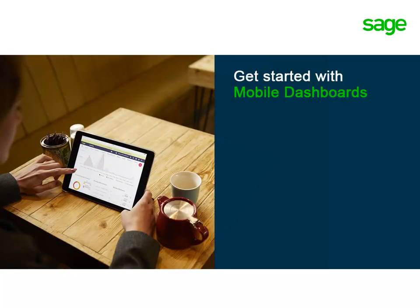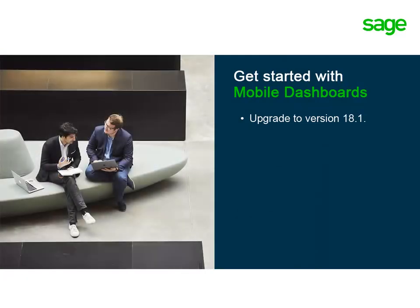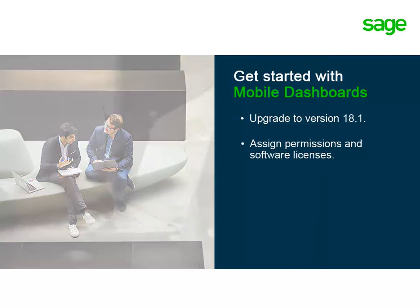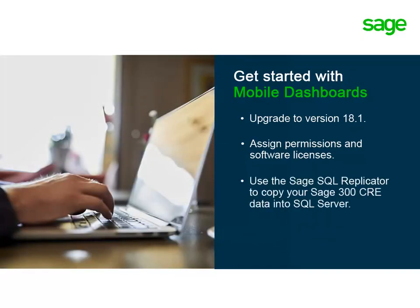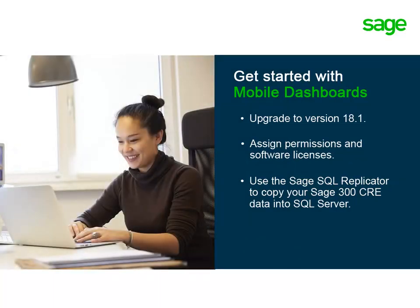Want to start using mobile dashboards? Here's what you should know. First, upgrade to version 18.1 or higher. Then grant your users permissions and assign software licenses. Mobile dashboards rely on SQL data — use the Sage SQL Replicator to copy your Pervasive data into SQL Server. And then deploy your Sage Construction Central website.